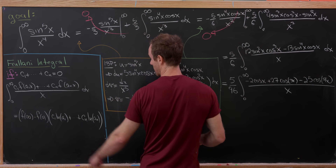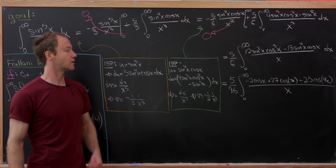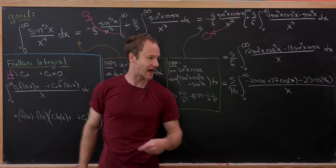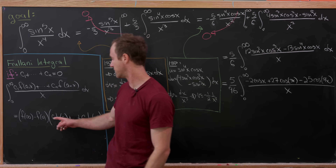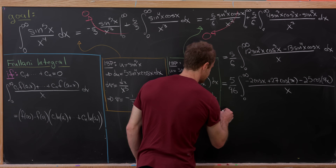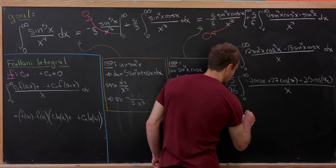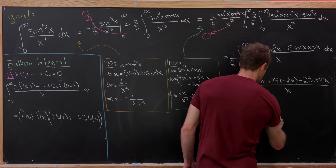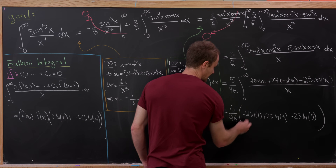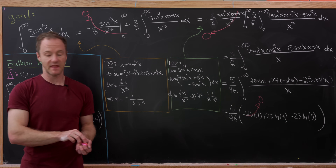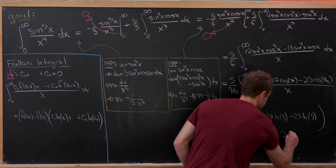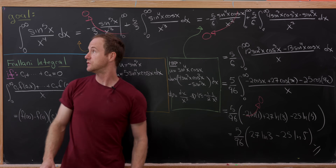This exactly satisfies the generalized Frulani condition: the coefficients −2 + 27 − 25 = 0, and our a₁ = 1, a₂ = 3, a₃ = 5 (noting the argument of the last cosine is 5x, not 7x). Since f = cos, the periodic version gives f(∞) = 0. Applying the formula yields (5/96)[−2·ln(1) + 27·ln(3) − 25·ln(5)]. Since ln(1) = 0, the final answer is (5/96)[27ln(3) − 25ln(5)].